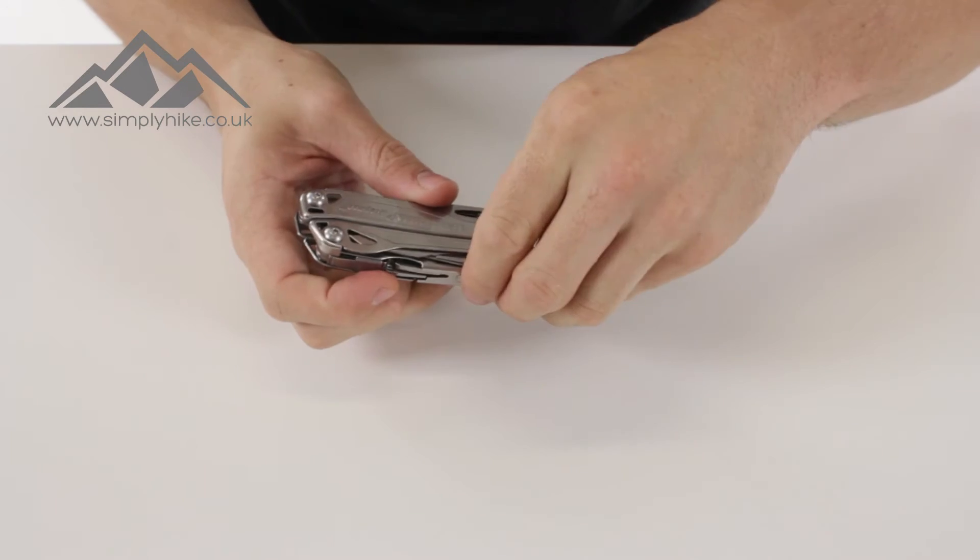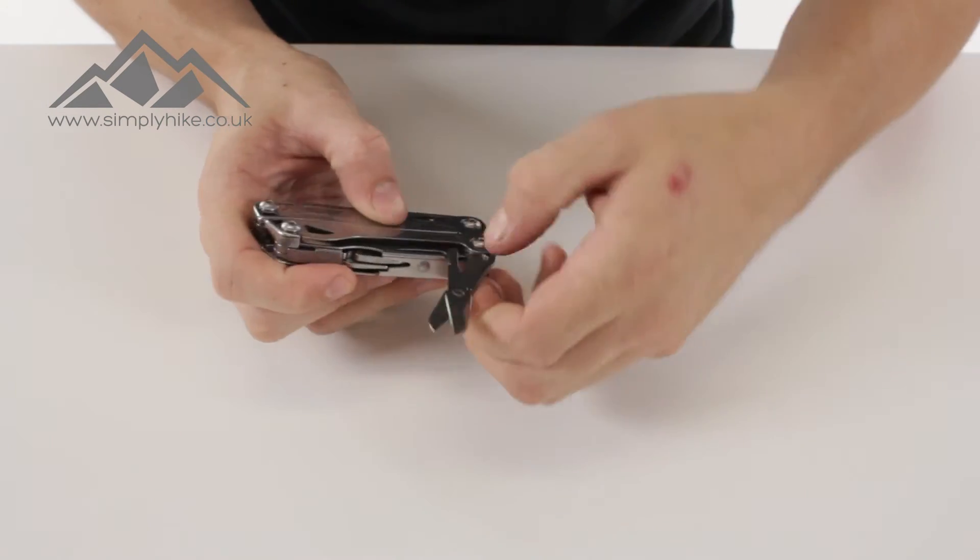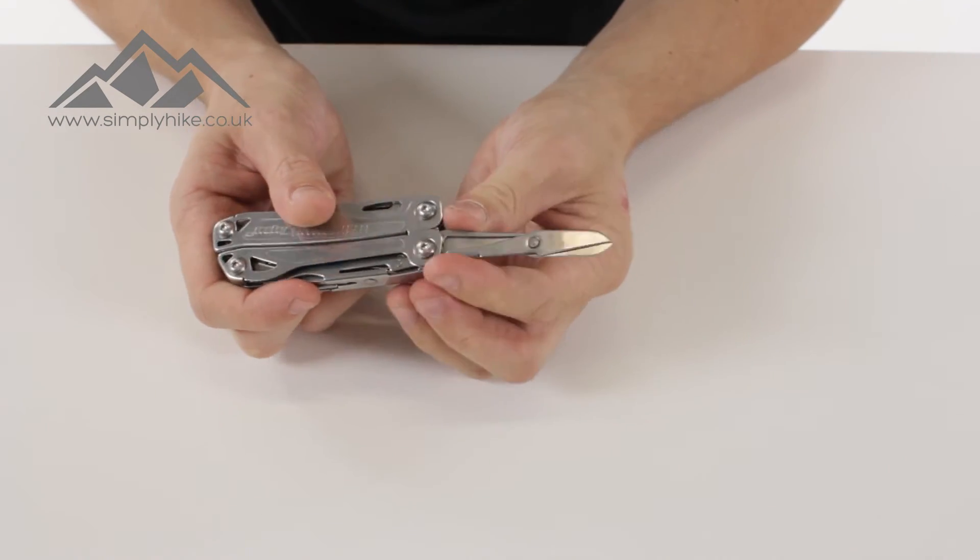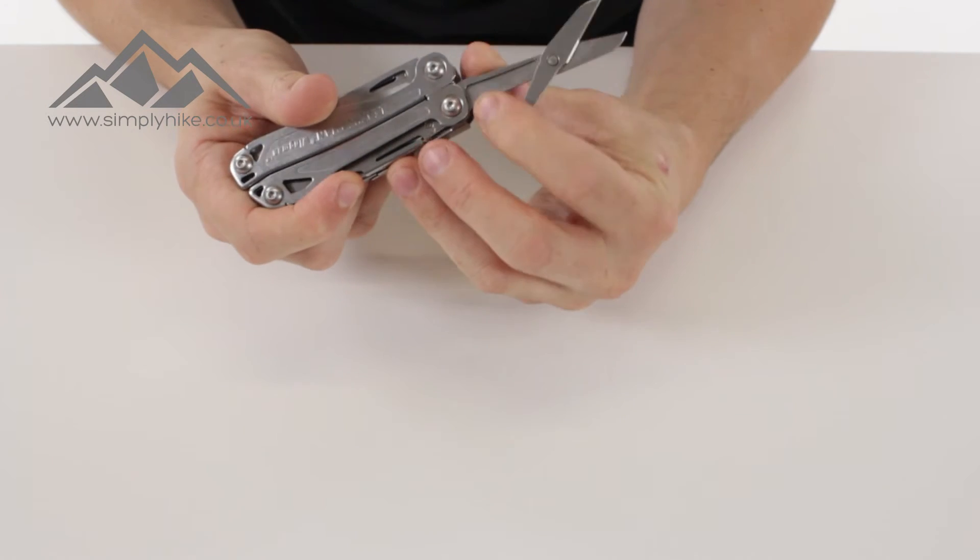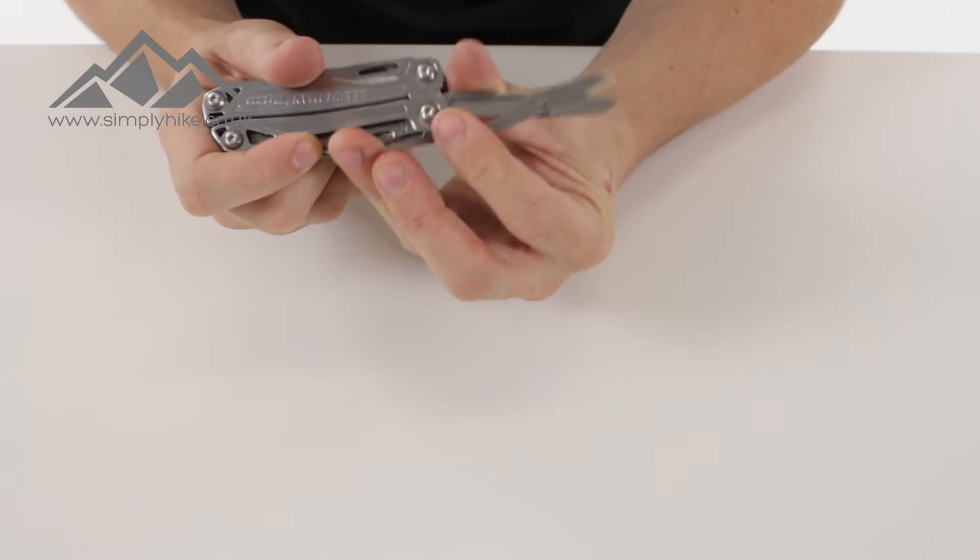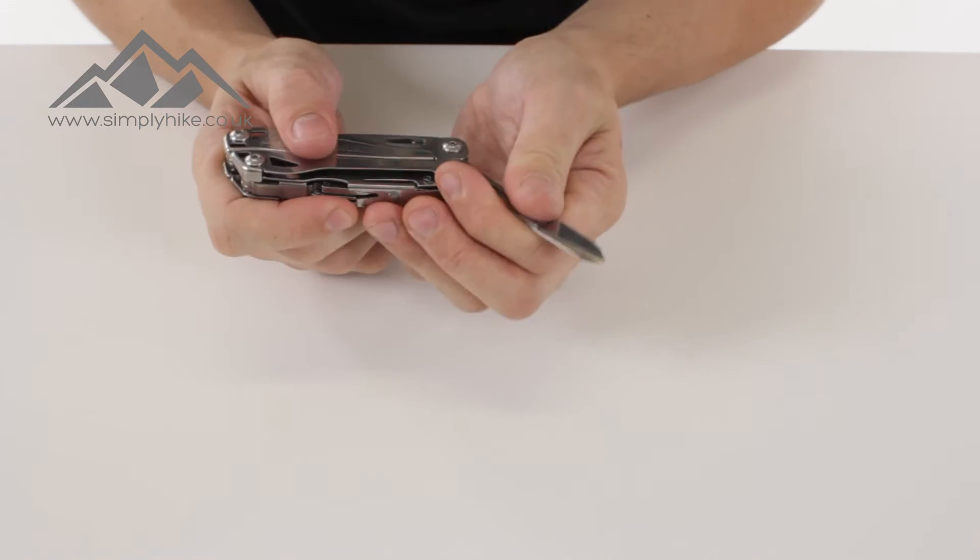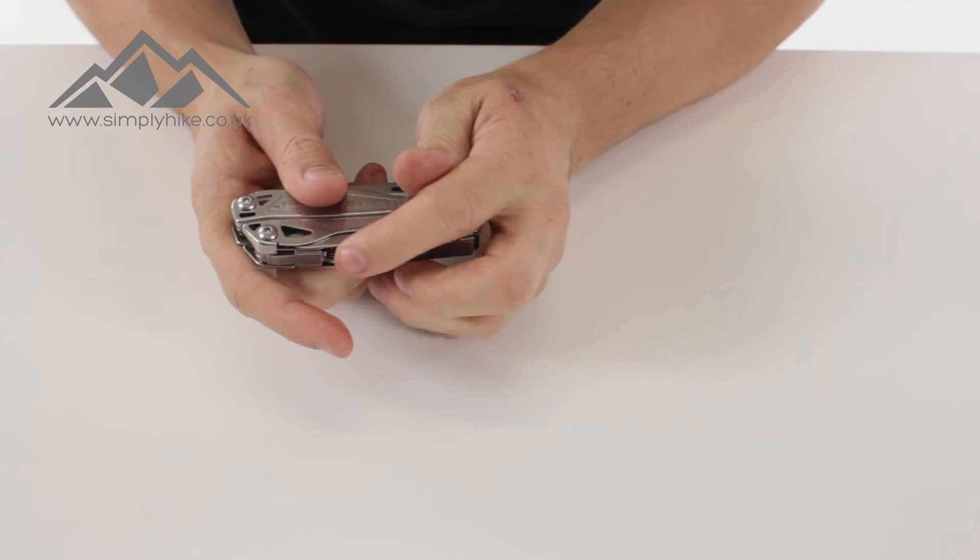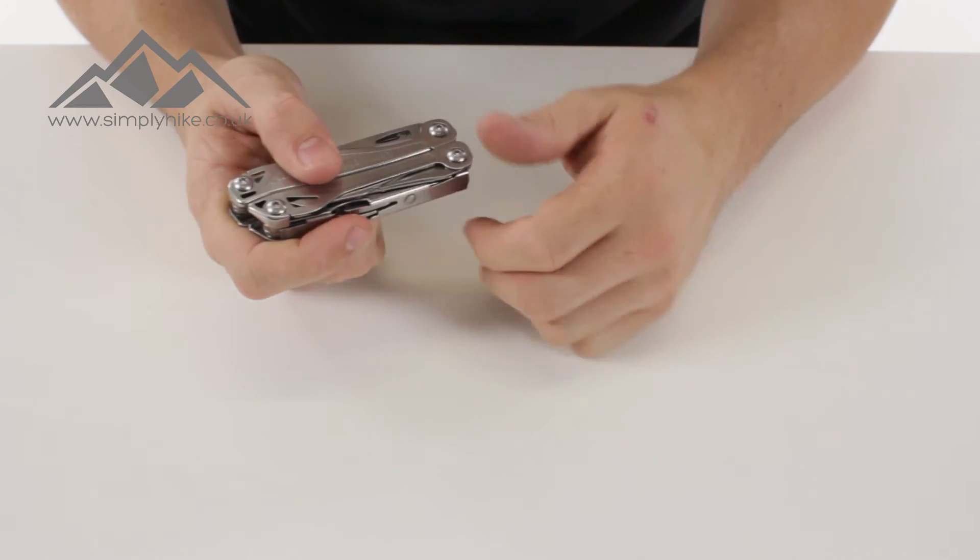And if I just flip it around to the other side, what you also have as well is some scissors. Now, there's no spring systems in there so it's a very basic standard bit of kit but it's very sharp and will pretty much cut through anything. Close that up, slide that in there.